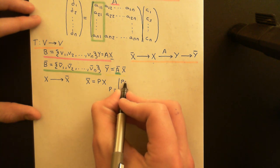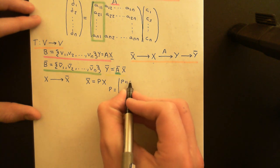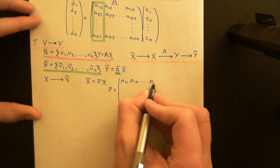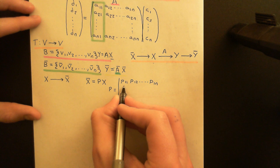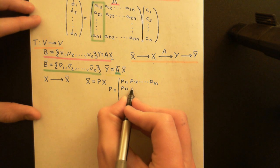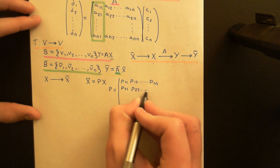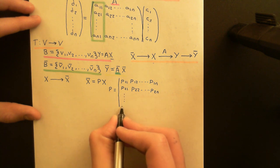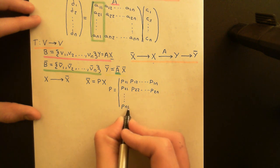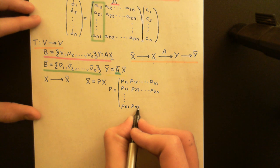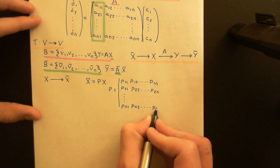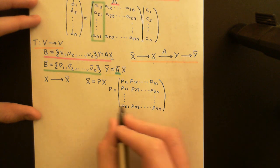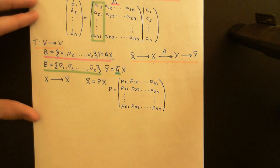This matrix P is an N by N matrix with components P11, P12, ..., P1N in the first row, P21, P22, ..., P2N in the second row, and so on all the way down to PN1, PN2, ..., PNN.